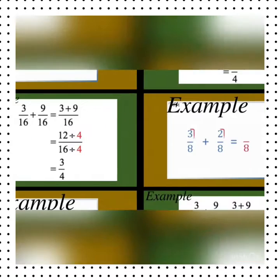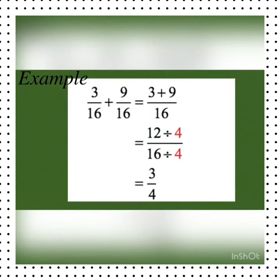Similarly in the next question also, after adding two fractions 3 by 16 and 9 by 16, we get 12 by 16, but it is not our final answer. We have to reduce it into simplest form by dividing by the greatest common divisor. Here it is 4. After dividing it by 4, we will get 3 by 4. We will get our final answer, that is 3 by 4.